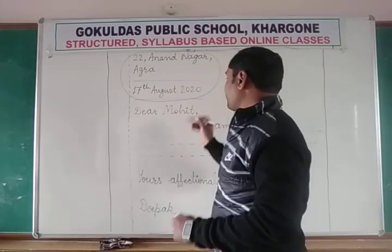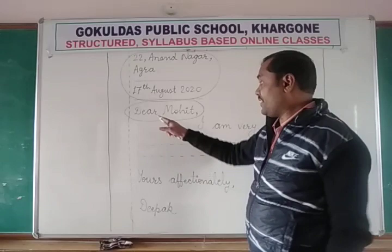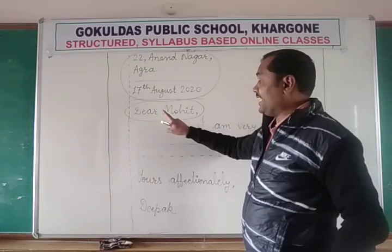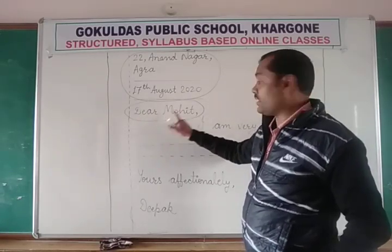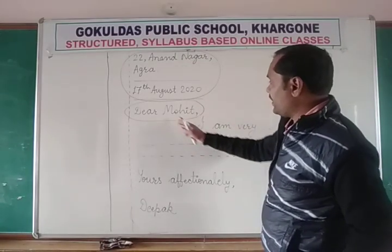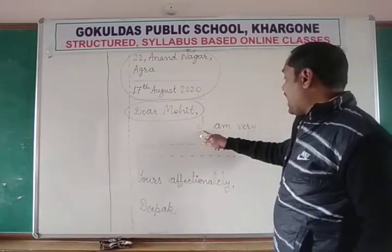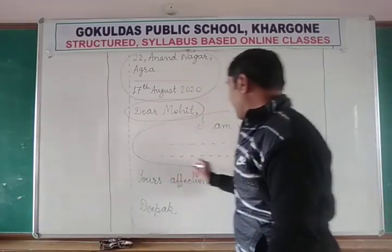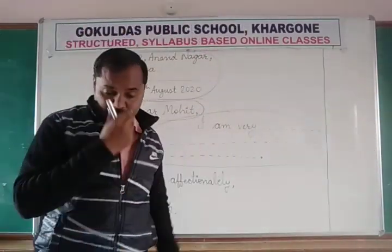Then write the salutation. I am writing this letter to my friend Mohit, so I can start with 'Dear Mohit' or 'My dear friend Mohit.' Remember: start with a capital D, and names always begin with capital letters — 'Dear Mohit,' then a comma. Leave that line and come to the line below, starting where 'Mohit' ends. This begins the body of the letter — the main purpose of writing the letter is written here.